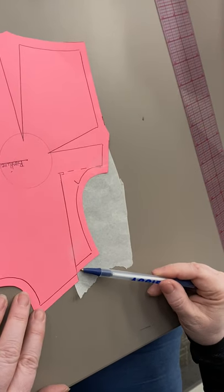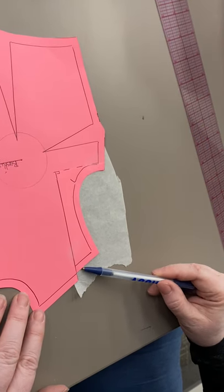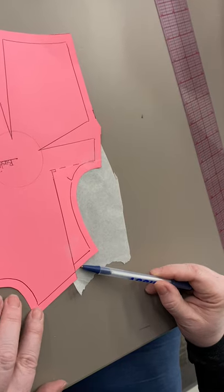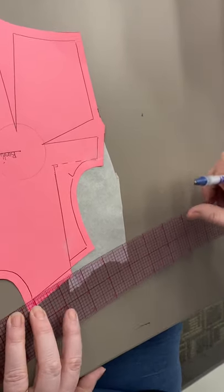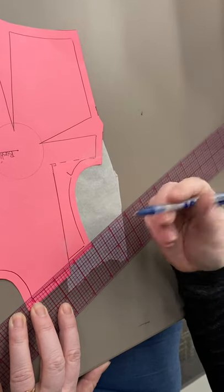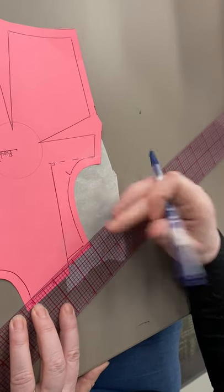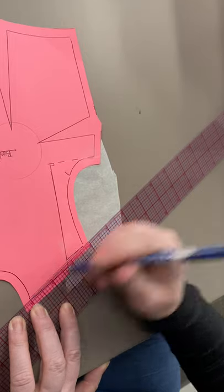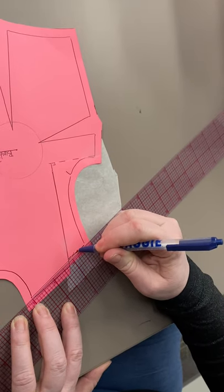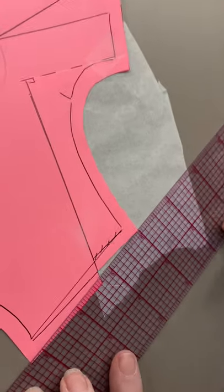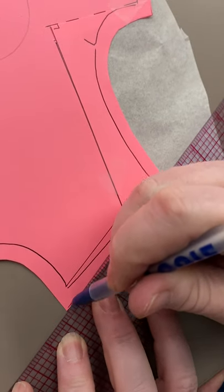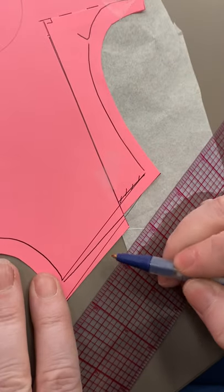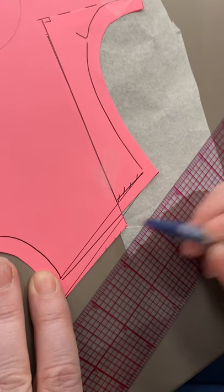So now our seam lines and our cut lines do not match, so we need to redraw the angle. Original seam line to original seam line. This line no longer applies. Original cut line to original cut line. This line no longer applies.